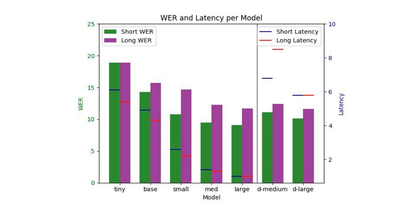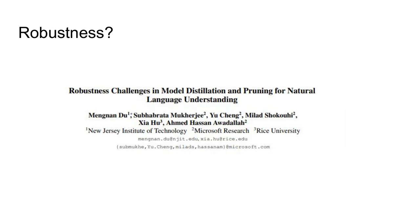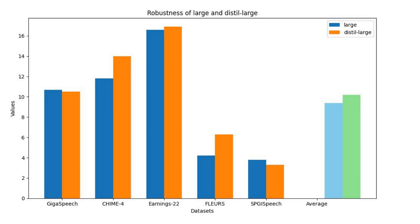More importantly, both models significantly speed up inference in practice. We see a nearly five times speedup with the distilled large model compared to the original large model, and even greater speedups for the medium model. This is the main headline result: you can get very large speedups using distillation with only small decreases in accuracy. In practice, robustness is critical for speech recognition — we want these models to be deployed in a variety of different circumstances. Various papers have questioned whether distillation approaches maintain the robustness of original models. We find that in general, the distilled performance is very close to the original large model across different datasets and domains.